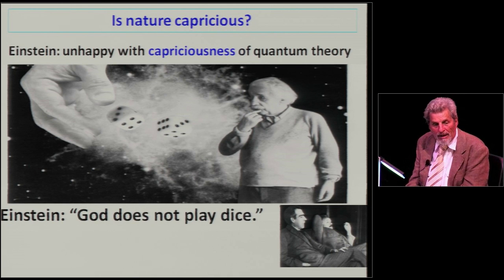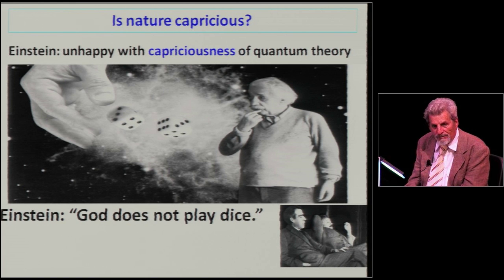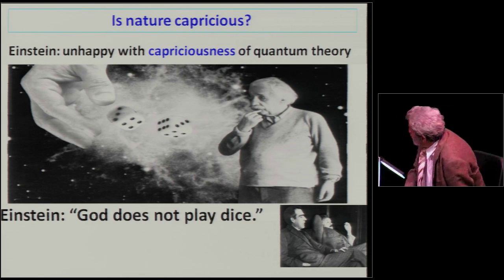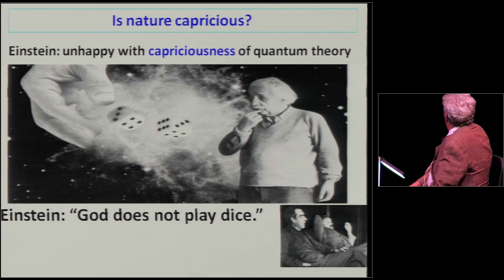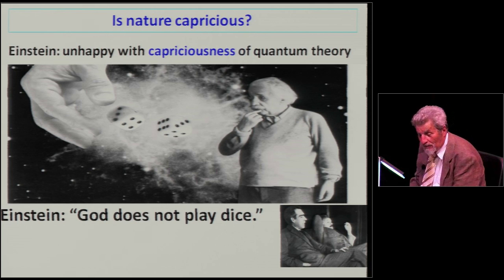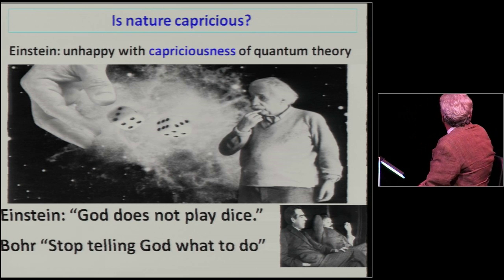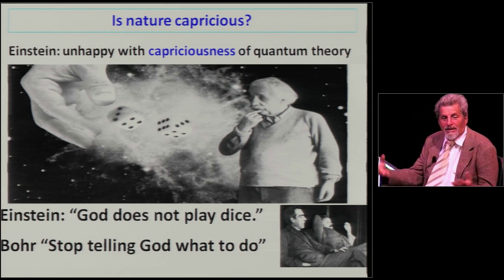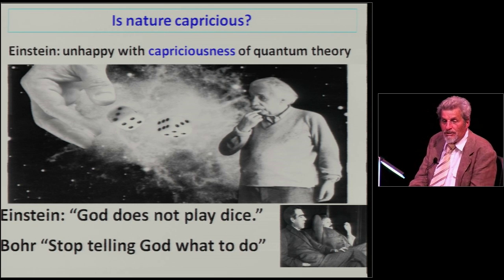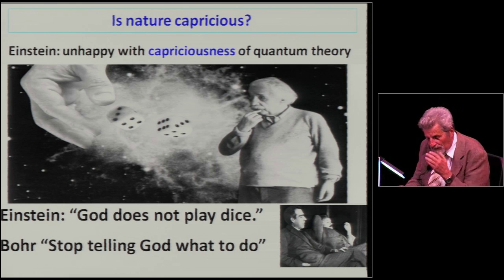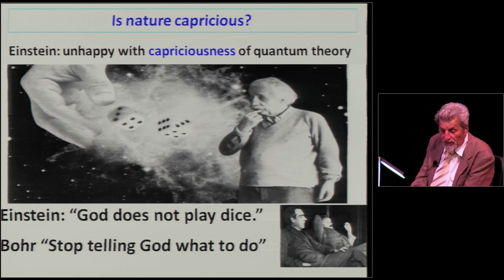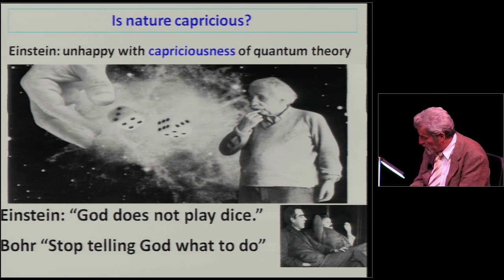That made Einstein extremely unhappy, and he coined the phrase 'God doesn't play dice.' Then Bohr came and told him, 'Stop telling God what to do.' Bohr believed that quantum mechanics is consistent and beautiful and there will be some way eventually to understand it - but in fact it actually meant that you don't have to understand it, you just have to accept what it is.